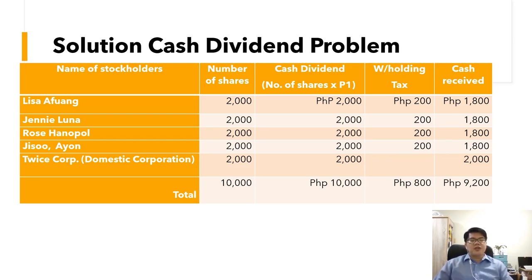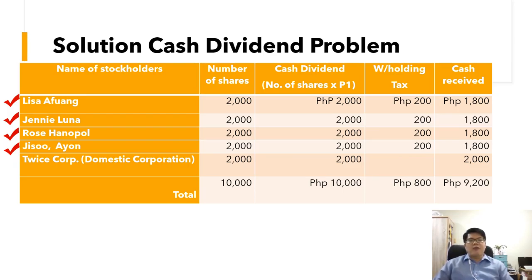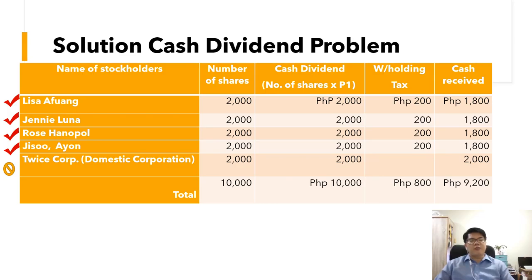The question is: what are the tax implications for the individual taxpayers Lisa, Jenny, Rose, and Jisoo, for domestic corporation Twice Corporation, and for Blink Corporation as the dividend payer? To compute the cash dividend, multiply the 1 peso dividend per share by the number of shares held. Each stockholder has 2,000 shares times 1 peso, giving 2,000 each, for a total of 10,000. For the individual taxpayers, a 10% withholding tax is deducted, so the net cash received is 1,800 per stockholder.